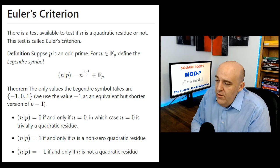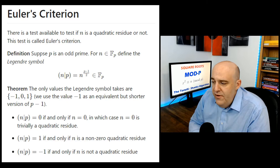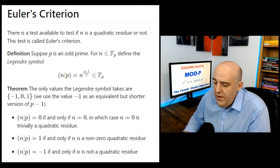In Python, we can easily calculate powers like this. Even if p is a very large number, we can calculate modular exponentiation very easily in Python. So the Legendre symbol is very easy to calculate, even for large primes.